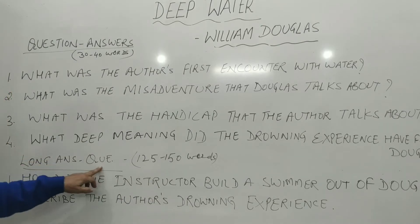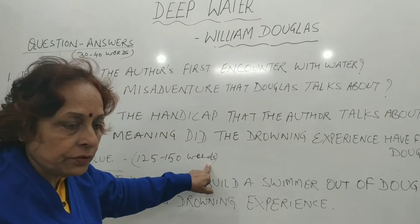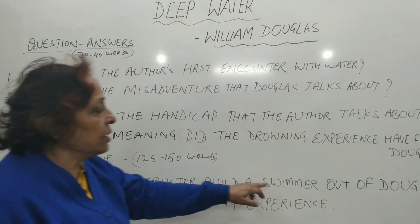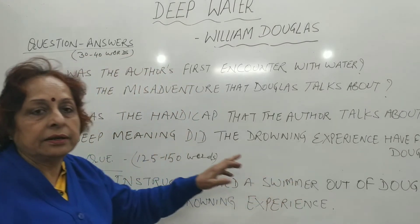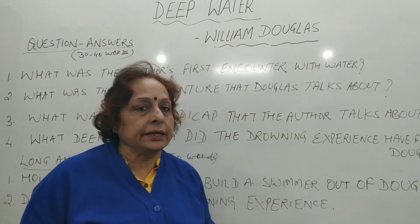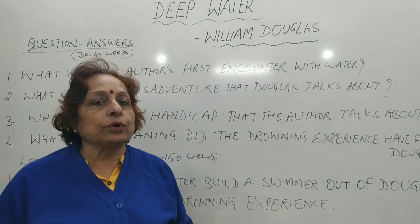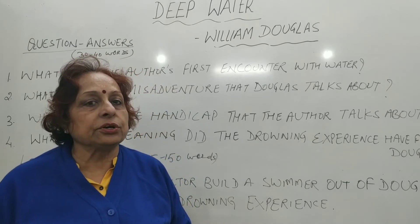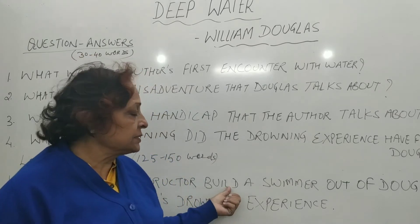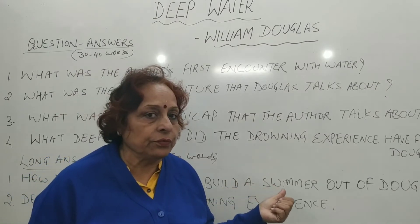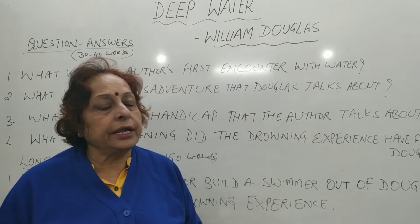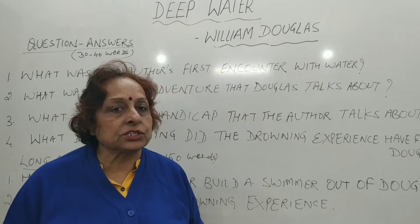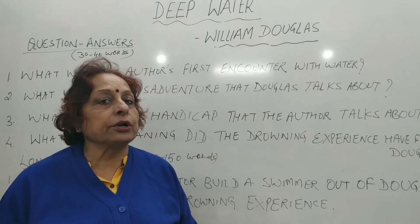Long answer questions to be answered in 125 to 150 words. The first question is: how did the instructor build a swimmer out of Douglas? When Douglas felt that his fear of water was a handicap — he was not able to go for boating, fishing, swimming, canoeing, etc. — he decided to overcome his fear of water. So he engaged an instructor. The instructor taught him in three different steps.